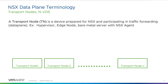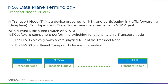First, the idea of a transport node. Transport nodes are really anything that is under NSX management — hypervisors, edge nodes, bare metal servers, anything with an NSX agent. These are things that are controlled by NSX, and for all intents and purposes their networking is managed by NSX. We refer to them as transport nodes. You'll sometimes see the term 'host' used interchangeably for transport node, but they're kind of one and the same. The NSX virtual distributed switch, or NVDS, is the software component that bridges all those things together.